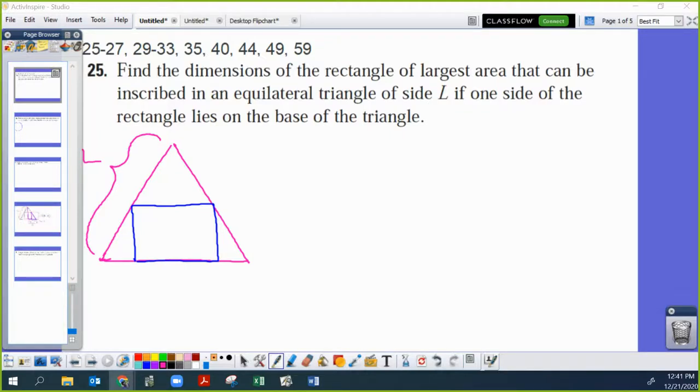So this is problem 25 from section 47, the optimization problems, and you're supposed to find the largest area rectangle that you can inscribe in an equilateral triangle.